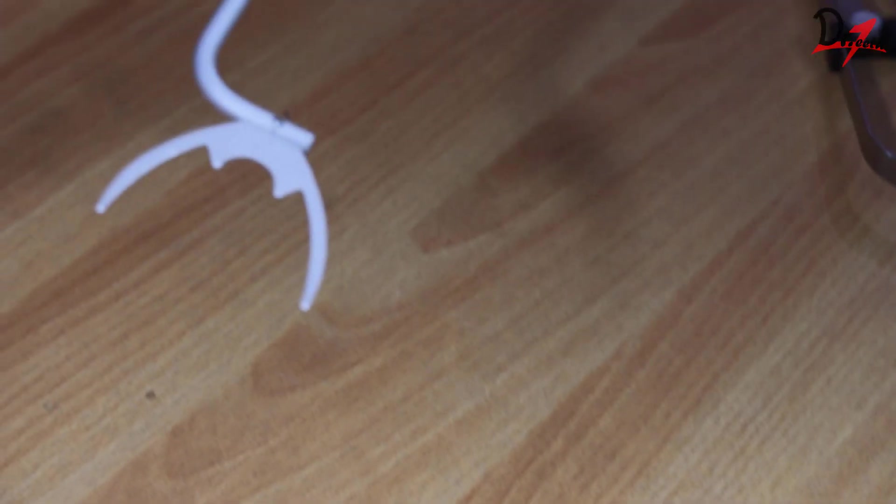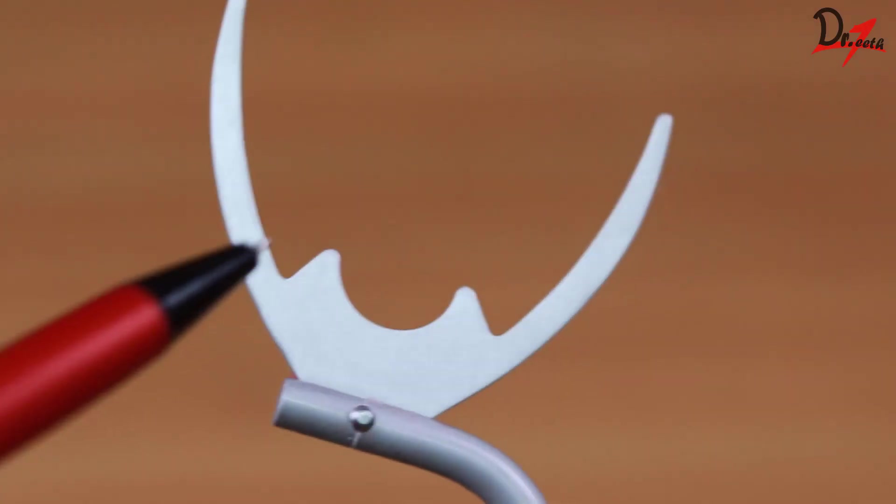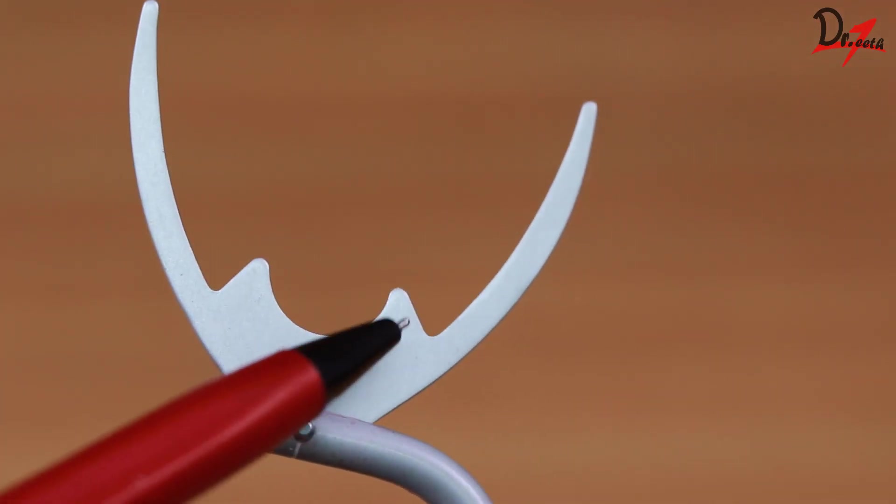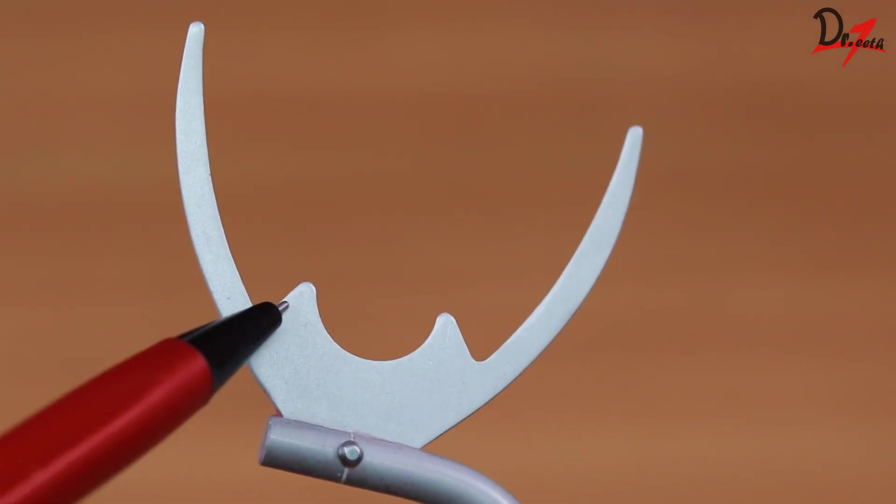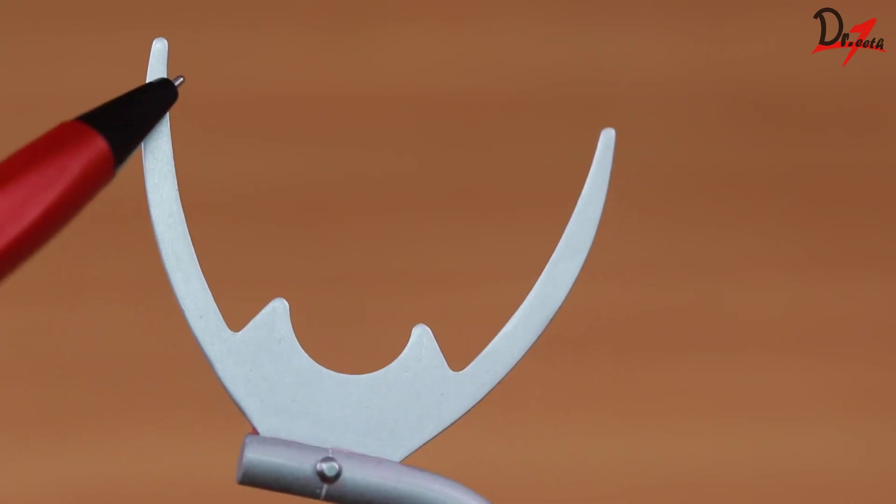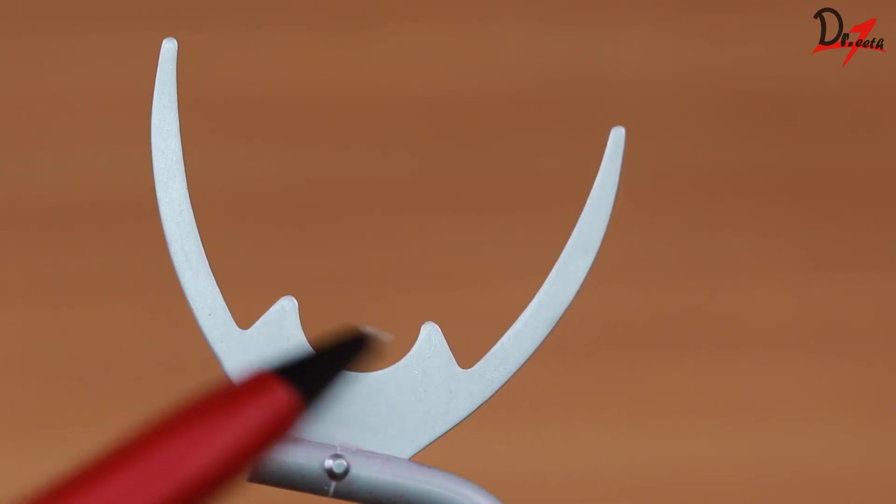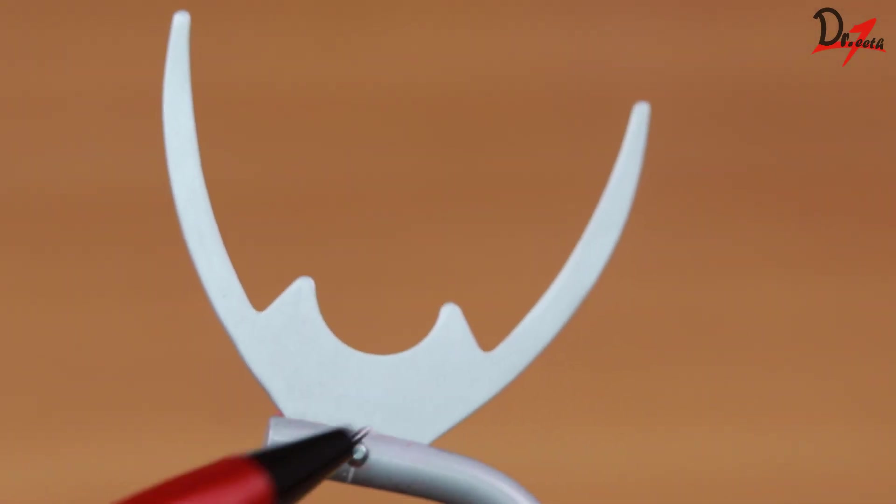Now this fork is for the edentulous cases. You can see we have two prongs here. The inner prong will go and it will be fixed to the maxillary rim, and these peripheral prongs, they will be aligned to the buccal surface of the rim. More details on that when we actually demonstrate it on a patient.